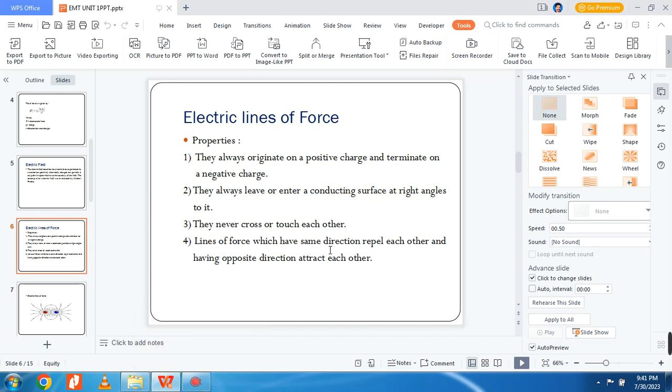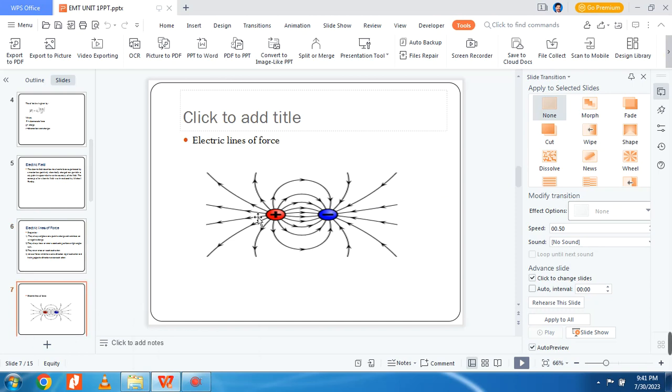Lines of force which have the same direction repel each other, and having opposite direction attract each other. The figure clearly shows here we can see it repulses each other, and here you can see it attracts each other.